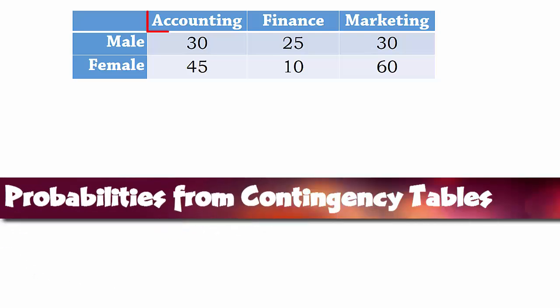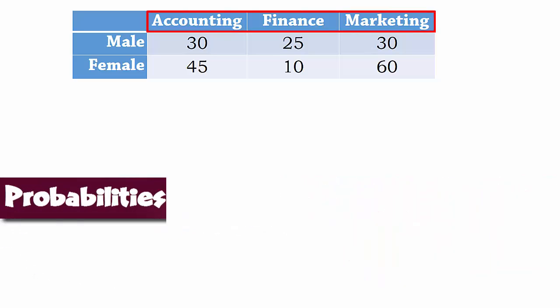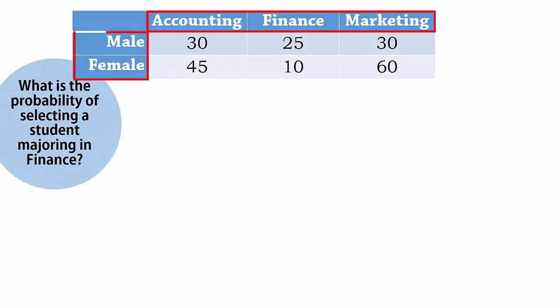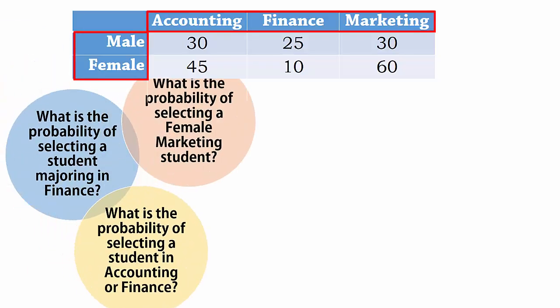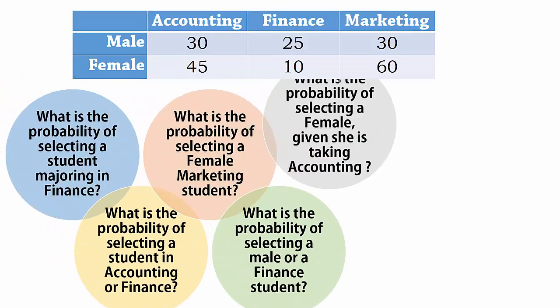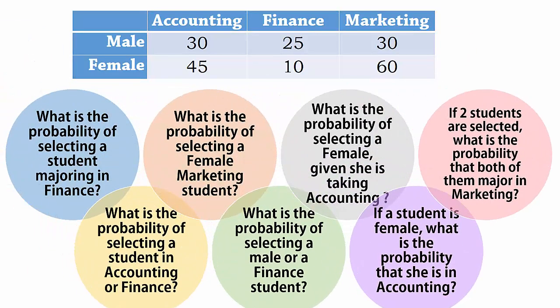Welcome. This table shows the major of some 200 business students, classified by gender. I will be answering the following questions based on this table. These questions can be answered intuitively, but I will also be using basic probability rules to answer them.